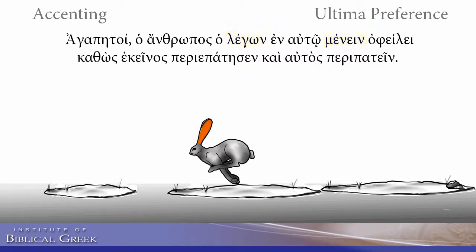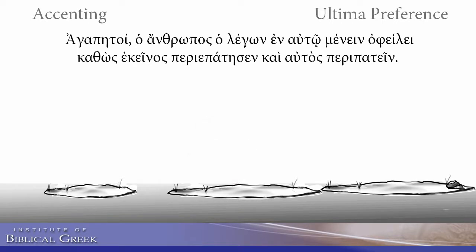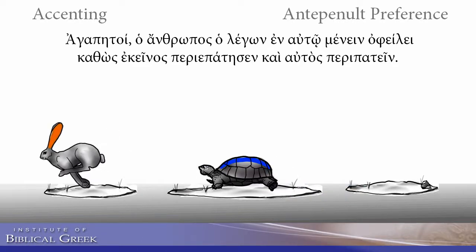We've covered two out of three possible ways of accenting non-verbs: words accented on their ultima following the box pattern or staying there, and words accented on their penult with an acute that are completely stable. Now we have words that have their accent stretched to their furthest position — the last logical possibility. In order to get accents out to their furthest position, we have to assume a short ultima. Once the ultima is short, the acute can run all the way out to the antepenult, and the circumflex is close but one step behind on the penult. When the acute was on the ultima we called it oxytone; on the penult, paroxytone; and now way out on the antepenult, we call that proparoxytone.